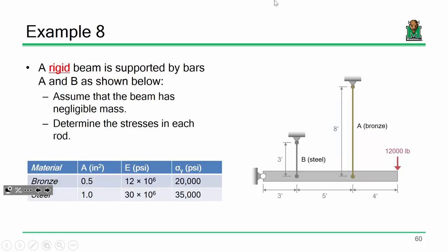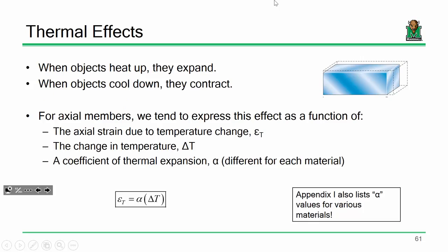We did something very similar for a problem with a rigid beam supported by two deformable bars — one made of steel, one made of bronze. We recognized that the beam would deflect in a linear fashion, so we used compatibility relationships to recognize that the steel and bronze wouldn't deform to the same degree, but they would be proportional based on the geometry. Did anybody have any questions about those indeterminate problems?